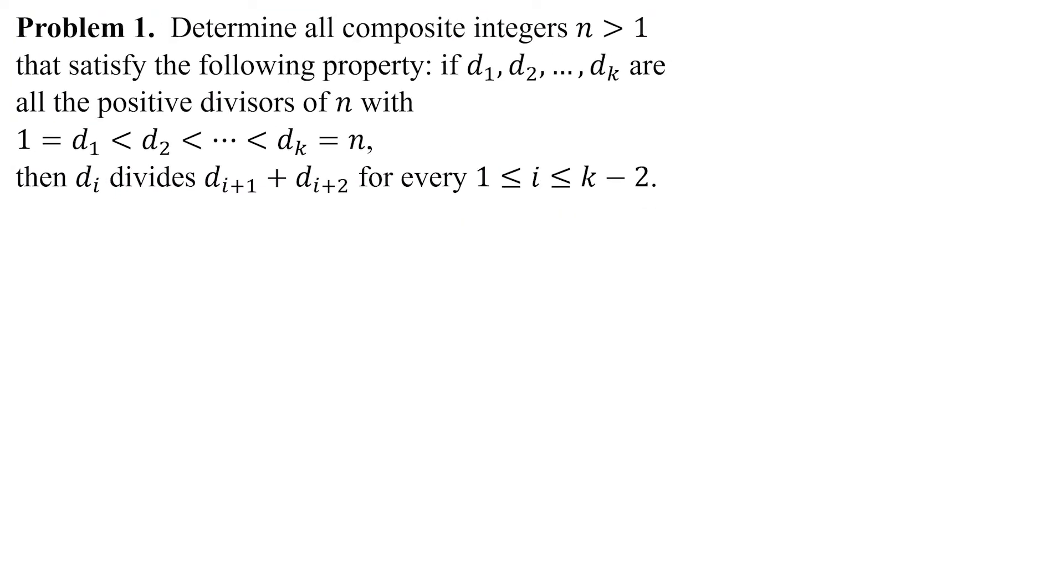So it's asking about the divisors or the factors of this number n. They have to satisfy this property that if we list the divisors in order, then one divisor divides the sum of the next two.